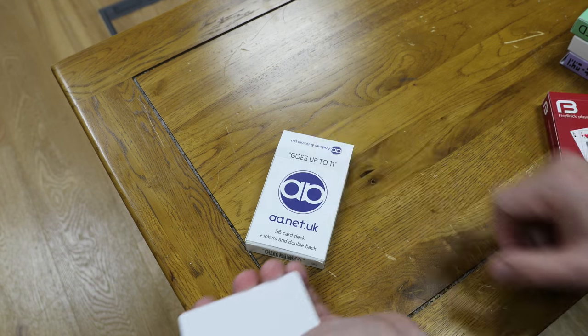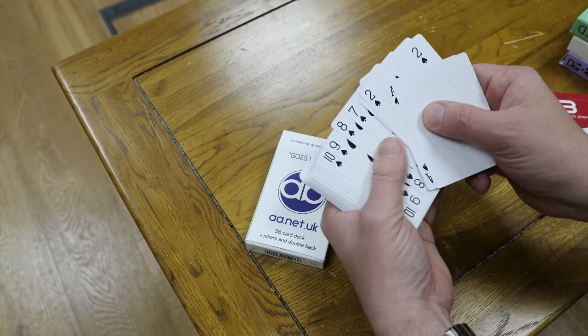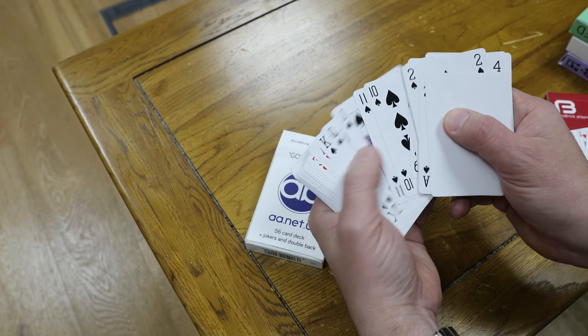Now the Andrews & Arnold deck is special because it has an extra card. As it says on the box, it goes up to eleven: ace, two, three, four, five, six, seven, eight, nine, ten, eleven, jack, queen, king. So there's an extra card in each suit. Obviously, you can take these out and play the cards as normal, or you can play games with the extra card. It's quite a novel twist and makes for some interesting games.